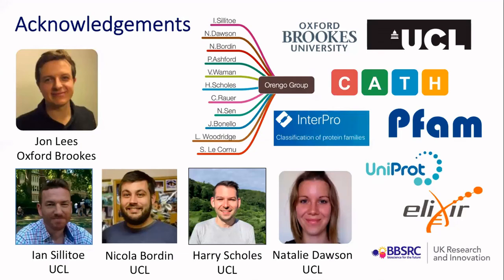Question: How difficult would it be to apply the algorithm to a totally different set of annotations? It should be very straightforward. We used what we thought were the most accurate functional families — our own, because we've explicitly classified them for function — but the curated resources within InterPro also have some thought about function in the grouping. You could use any domain family resource with this method; the algorithm simply learns what distributions of probabilities make for a good GO prediction.